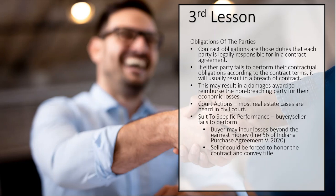In the real estate world, the obligations seem pretty apparent, but let's go through them. Obviously, the buyer's obligation is to surrender money for the freehold estate or the conveyance of the real property. The seller's obligation is to surrender the real property — typically with what we call clear title. Now, it can be transferred without clear title, but that would have to be in the purchase agreement.